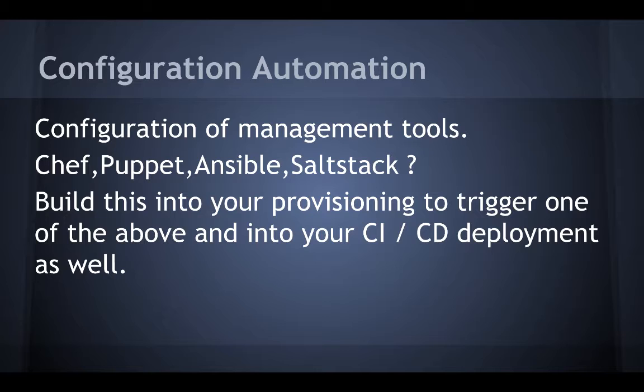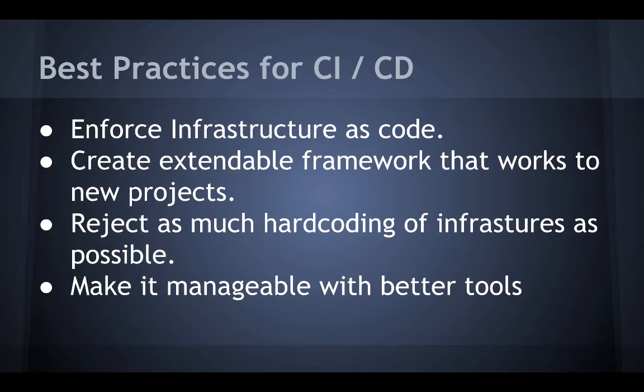Now let's move on to configuration management. It is critical that you build configuration management into your application deployment and provisioning deployment pipelines — this gives you the ability to actually do CI and CD. Best practices for CI and CD include: enforce Infrastructure as Code to create immutable infrastructure; create an extensible framework that works on new projects; reject as much hard coding of infrastructure as possible; and make it manageable with better tools.